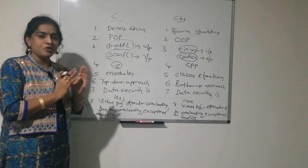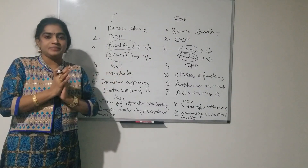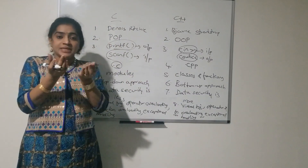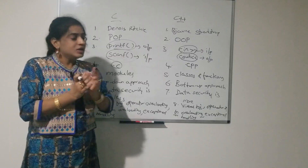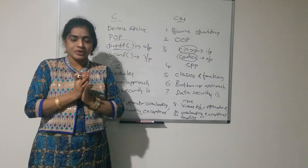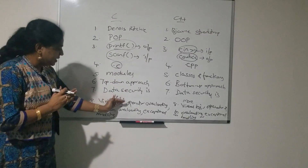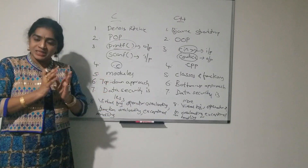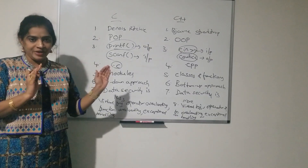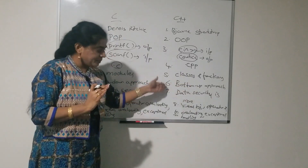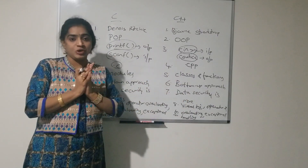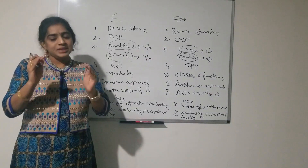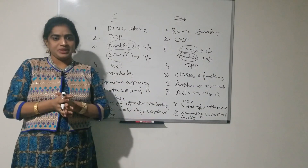As C is function oriented, data moves freely, which is why data security is less in C. In C++, data is encapsulated, so data security is more. In C we do not have virtual functions, operator overloading, function overloading, or exception handling. But C++ contains all these powerful concepts — virtual functions, operator overloading, function overloading, and exception handling — which are all available in C++.